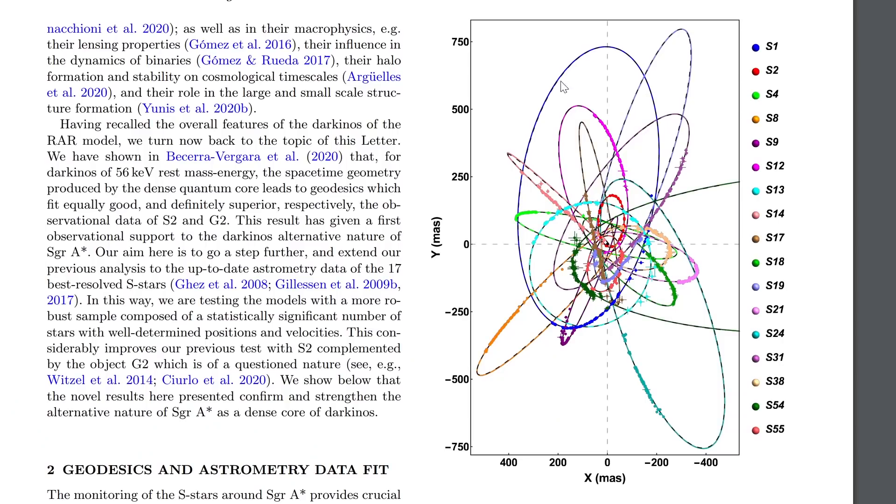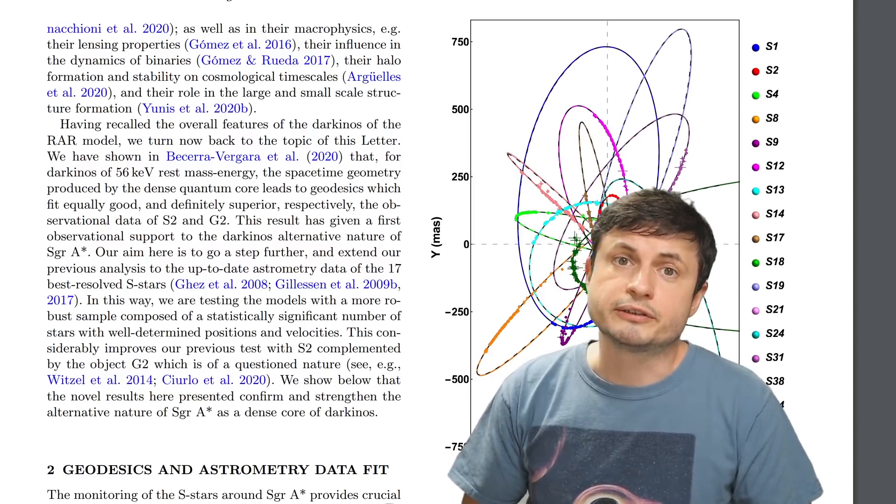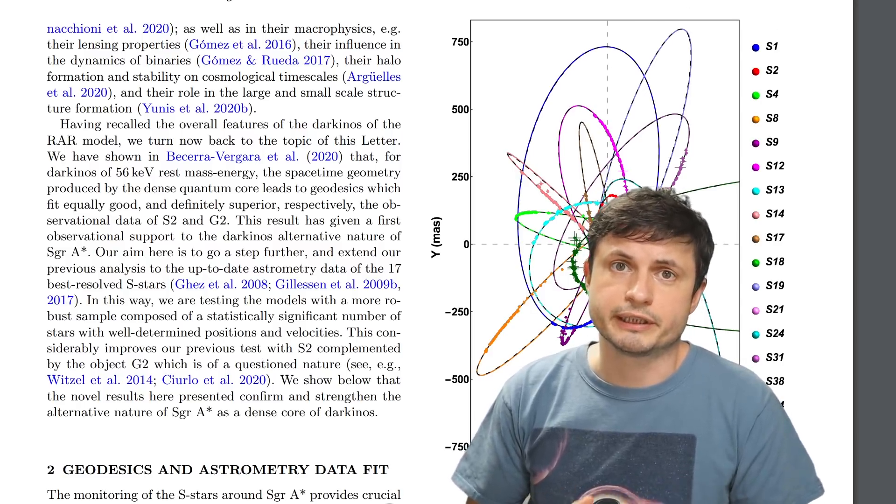And when they applied their calculations to 17 known objects with 17 known orbital parameters, mathematically at least, their explanation made a lot of sense. The orbit of every one of these objects, these S-stars in this region, could be perfectly explained using this particular idea.